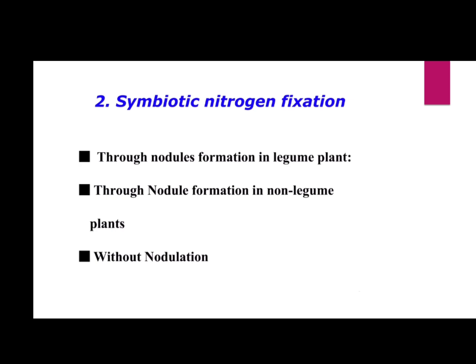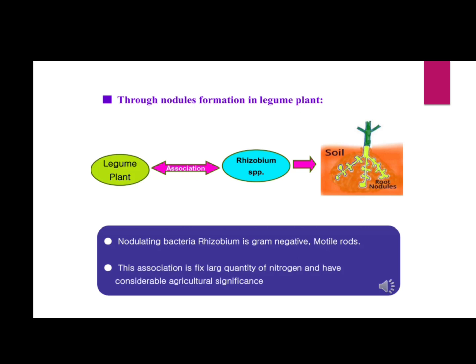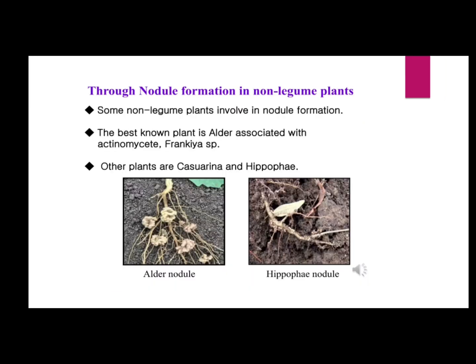Symbiotic nitrogen fixation is of three types: nodule formation in leguminous plants, nodule formation in non-leguminous plants, and without nodulation. A leguminous plant is any plant in the family of beans, peas, or lentils. The diagram shows the association between a leguminous plant and Rhizobium species. For non-leguminous plants, the alder nodule is the best example of nitrogen fixation.